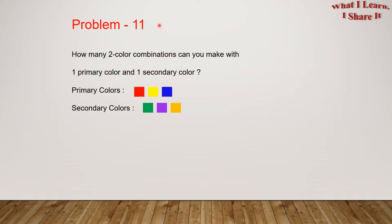Problem 11. How many two-color combinations can you make with one primary color and one secondary color? Primary colors: red, yellow, blue, and secondary colors: green, purple, and orange.